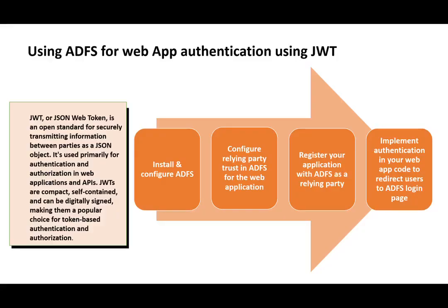Starting with JWT — it stands for JSON Web Token. It's an open standard RFC 7519 for securely transmitting information between parties as a JSON object. It is primarily used for authentication and authorization in web apps and APIs.